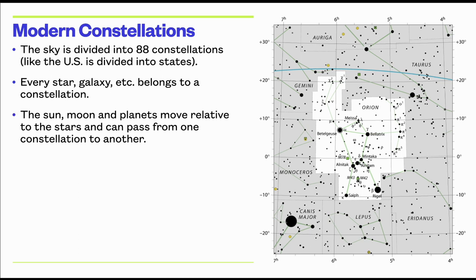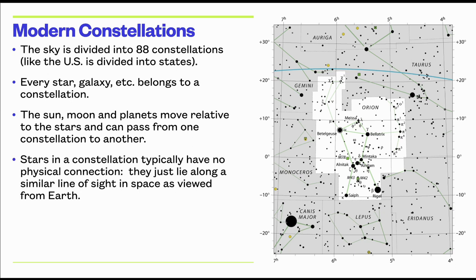Every star belongs to a constellation. Objects that move across the sky — such as the sun, moon, and planets — will move from constellation to constellation. The stars in a particular constellation usually have no physical relationship to each other; it's just that they happen to lie in a similar direction in the night sky as viewed from Earth. Over time, or if you were in a different part of our galaxy, they would look completely different.